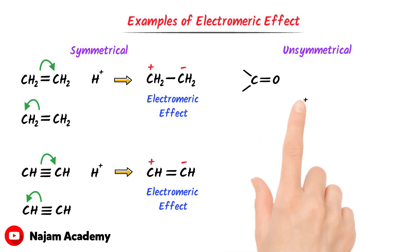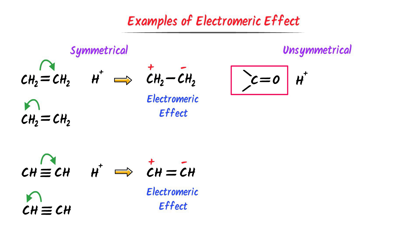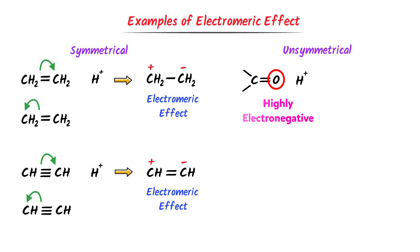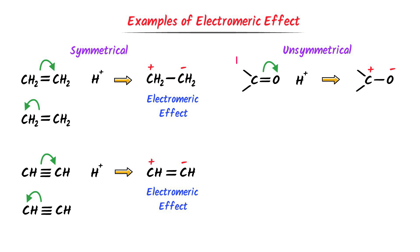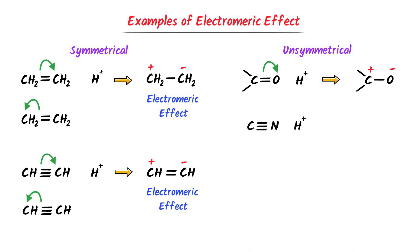Now consider these unsymmetrical organic compounds. In the first compound, oxygen is present, and oxygen is a highly electronegative atom — it will strongly pull the shared pi electrons. Hence, the pi electrons shift to the oxygen atom, causing a positive charge on carbon and a negative charge on oxygen. In this compound, you cannot shift pi electrons toward carbon because oxygen is electronegative. In the second compound, nitrogen is highly electronegative and pulls the pi electrons toward itself, causing a positive charge on carbon and a negative charge on nitrogen. Thus, electromeric effect is observed in both compounds.